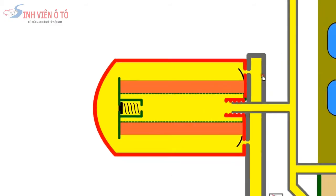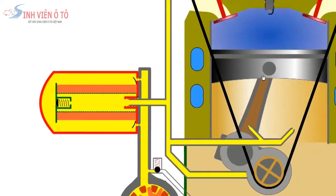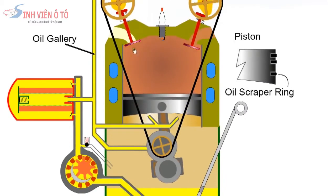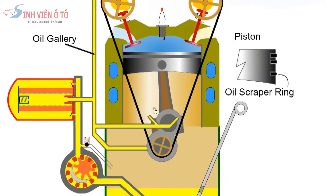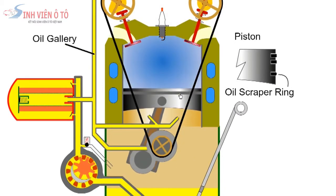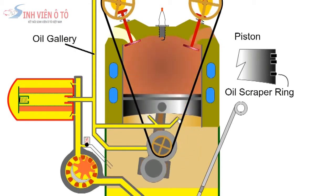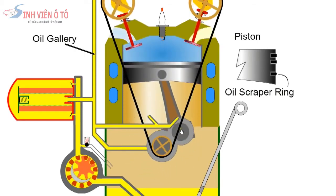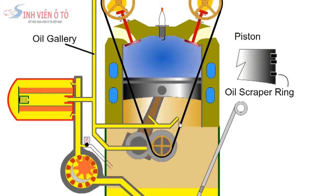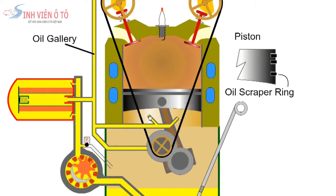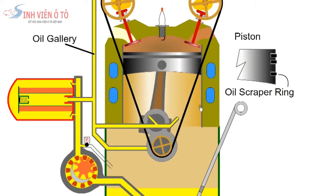The pump forces oil through the oil filter to the galleries and passages which then distribute it to the crankshaft connecting rod bearings and cylinder wall. Oil is forced through holes in the crankshaft to lubricate the big end bearing.